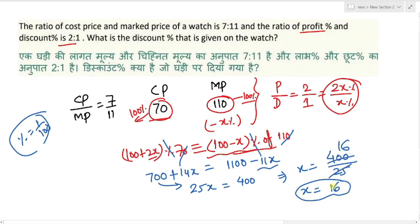Discount 16% होगा mark price पर, और profit 32% होगा। So हमारा answer है 16%। Thanks for watching the video — if you like the video, do subscribe the channel and share with your friends.